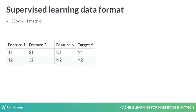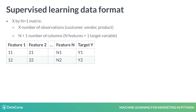The data format for a supervised learning model is typically an X by N plus one matrix with X number of observations — that could be customers, vendors, or products — and with N plus one number of columns, of which N is the number of independent features. And the last one is the dependent target variable that we will try to predict, for example, whether a customer churned.